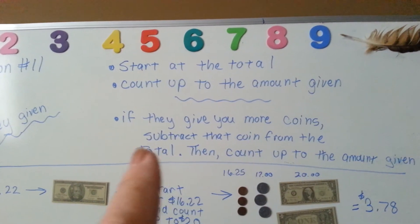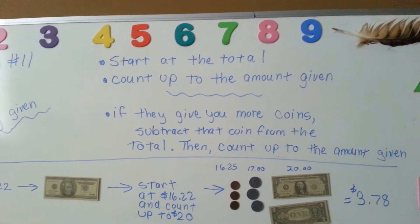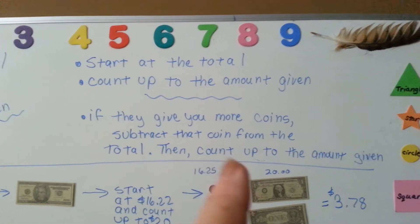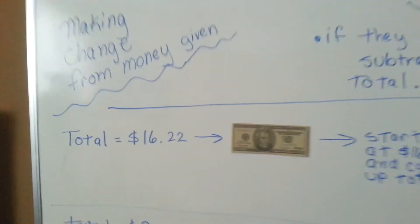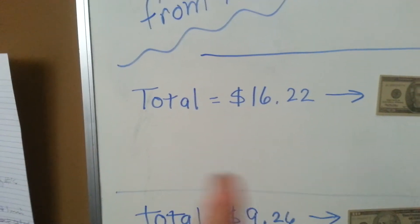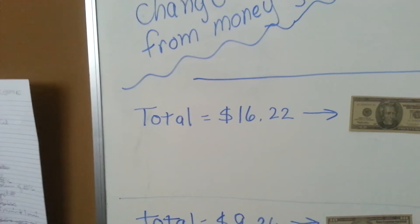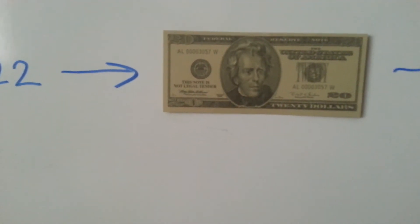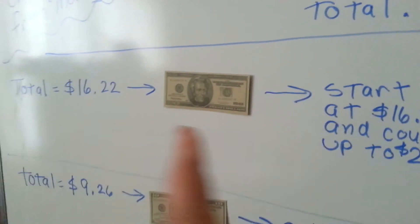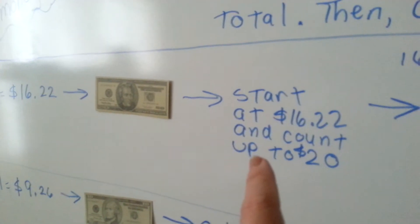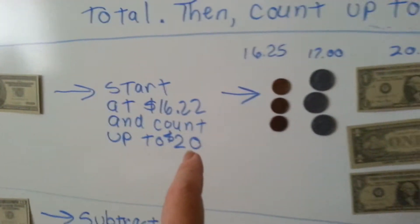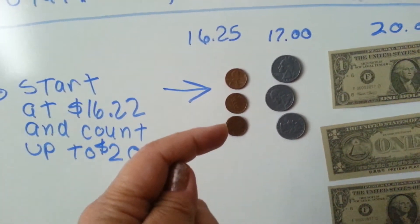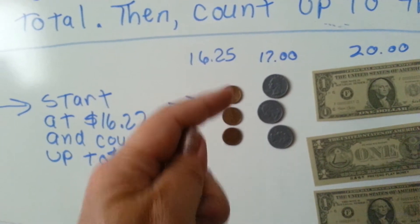Now sometimes people will give you more coins than you expect. What you would do is subtract that coin from the total and then count up to the amount given. So let me show you what I'm talking about. Let's say you're the cashier and you rang up a total of $16.22 for the person, and they hand you a $20 bill. What you would do is start at $16.22 and count up: $16.22, $16.23, $16.24, $16.25. So now you're at $16.25 and you've given them three cents.